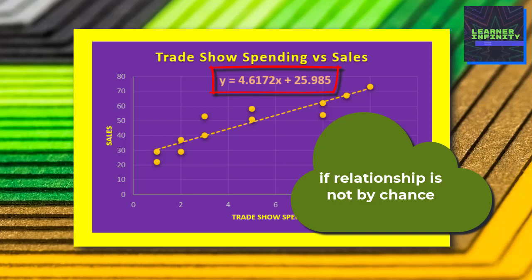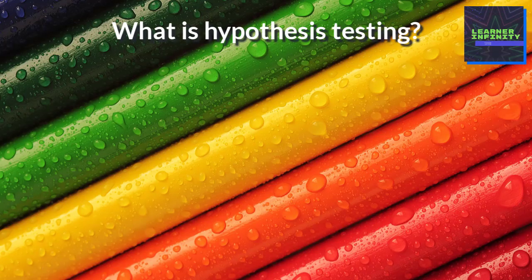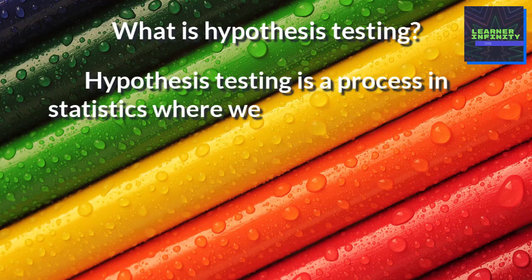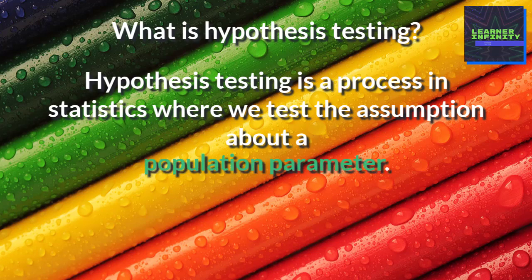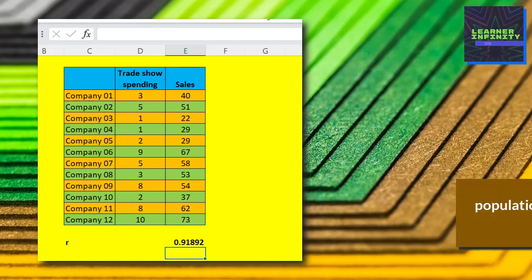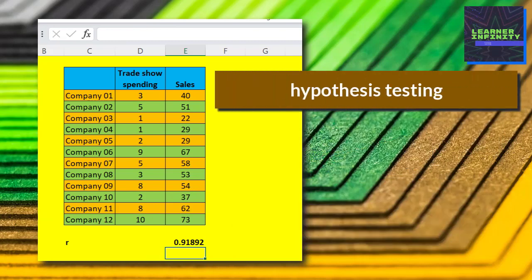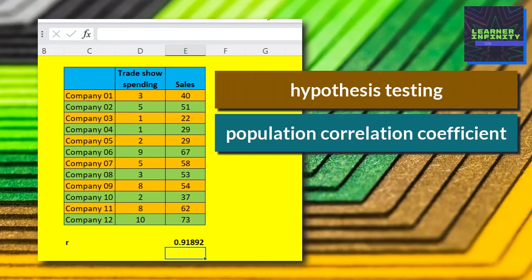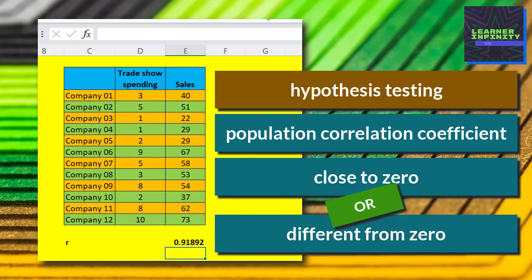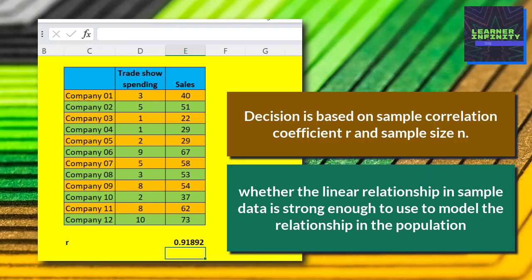But how can we judge that this is not a result of chance? The answer is to perform hypothesis tests of the significance of the correlation coefficient. Hypothesis testing is a process in statistics where we test the assumption about the population parameter. In our case, the population parameter is the population correlation coefficient. We only have sample data of 12 companies, so we are not able to obtain the population correlation coefficient. The sample correlation coefficient we previously calculated will be considered as our estimate of the unknown population correlation coefficient. Hypothesis testing lets us decide whether the value of the population correlation coefficient is close to zero or significantly different from zero, based on the sample correlation coefficient and sample size n. This will help us decide whether the linear relationship in the sample data is strong enough to use to model the relationship in the population.